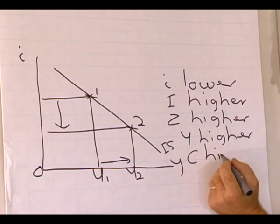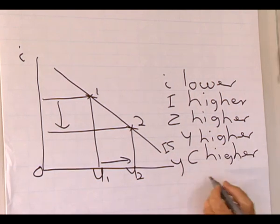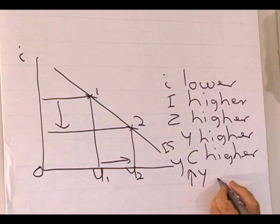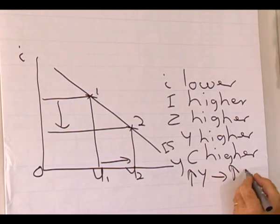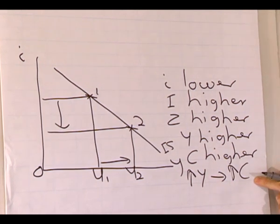Therefore, C will also be higher. We must remember an increase in the level of production leads to an increase in private consumption expenditure.